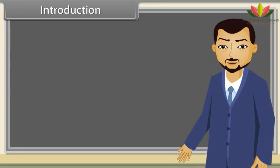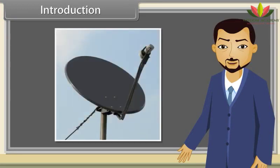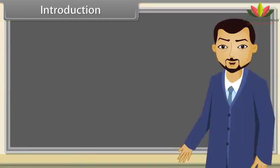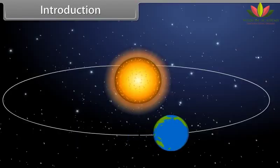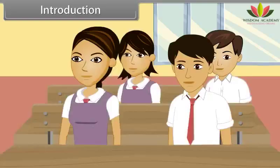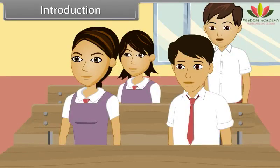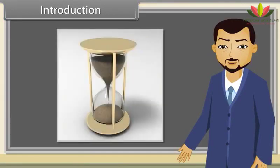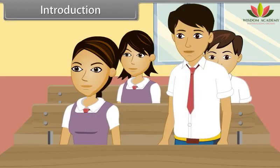How many of you have dish TV at your home? Do you know what kind of shape it has? Yes, it is parabolic in shape. Do you know what kind of path earth follows while revolving around the sun? Yes, it is elliptical in shape. So finally, who will tell me what kind of shape this object has? It has hyperbolic shape.